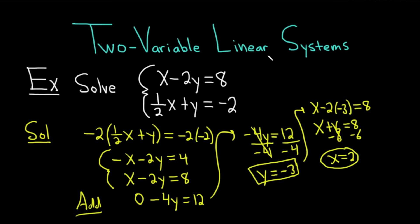Another way of writing the answer, which might be a preferred way, is to write it as an ordered pair. It would be parentheses x comma y. So 2 comma negative 3. And that would be the solution to the system of equations.